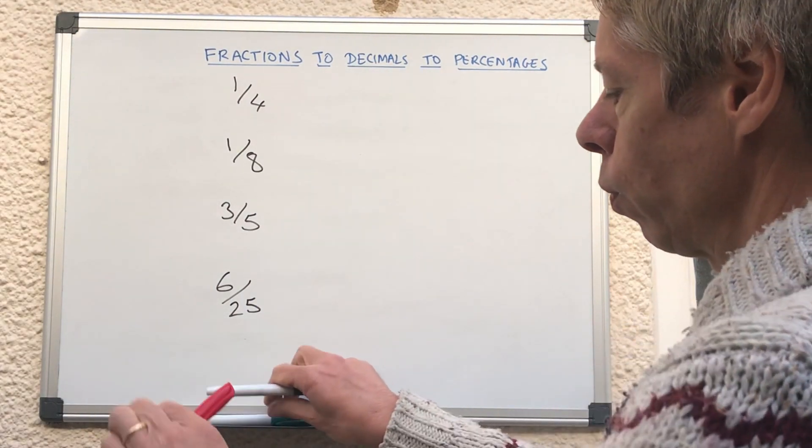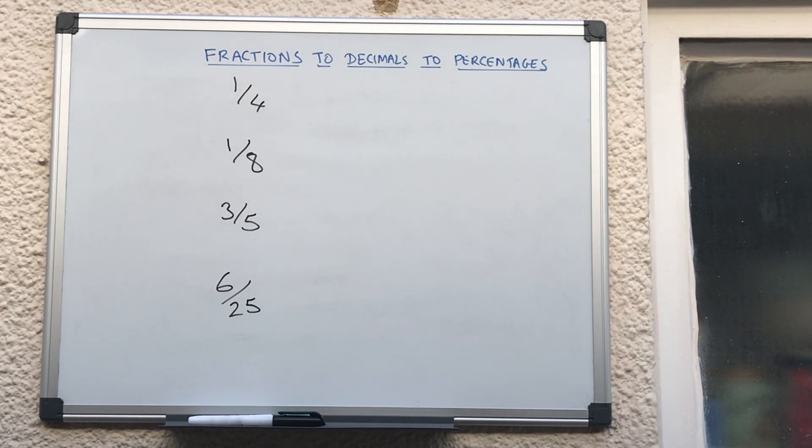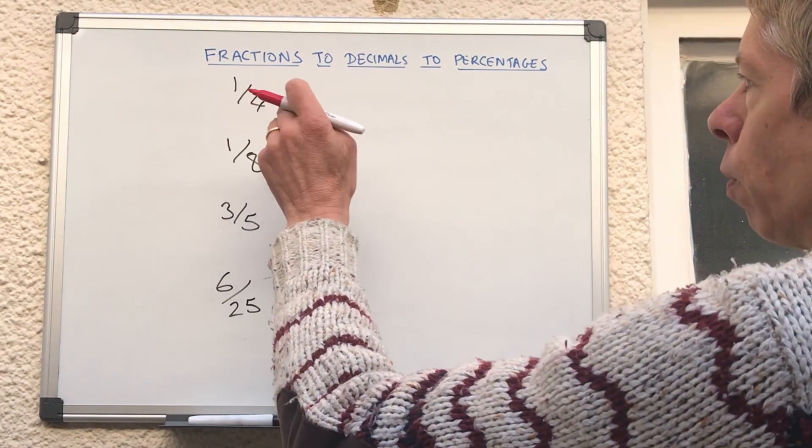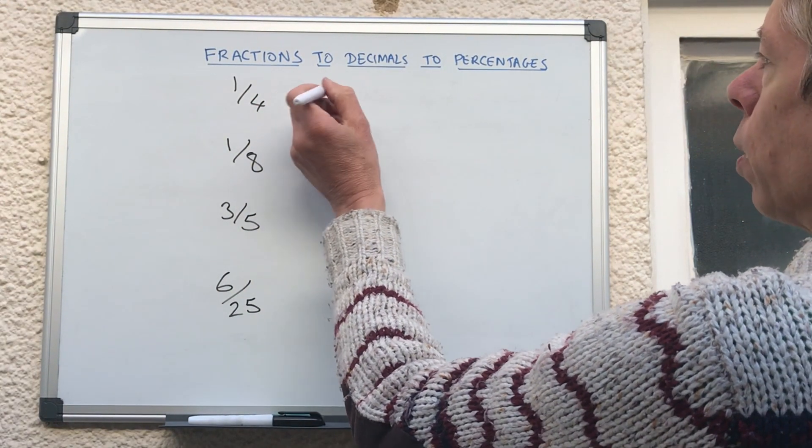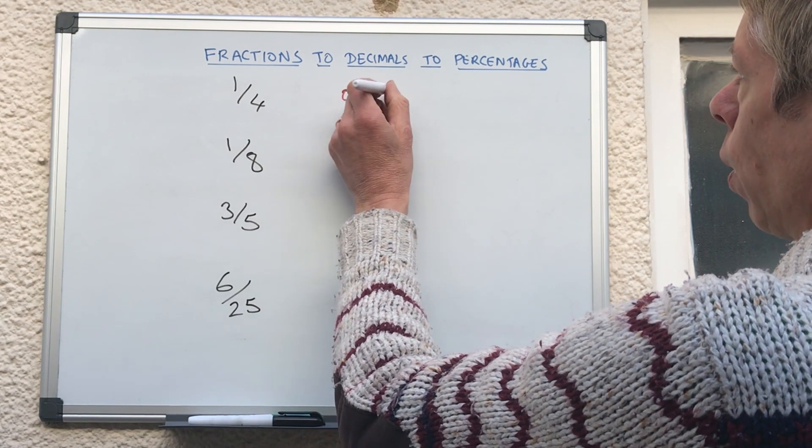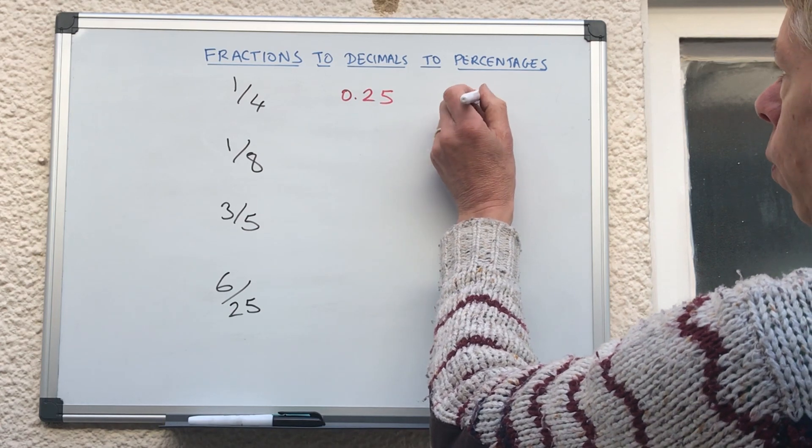So, if you haven't done them, if you haven't finished them all, just pause the video, and then you can check your answers. So one quarter, remember that was, we divided the thousand into 500, again into 250, so that was 0.25, as a percentage, first two places, is 25%.